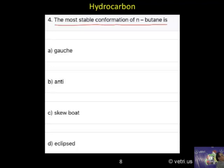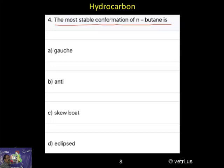The most stable conformation of N-butane is: A. Gauche, B. Anti, C. Skew boat, D. Eclipsed.